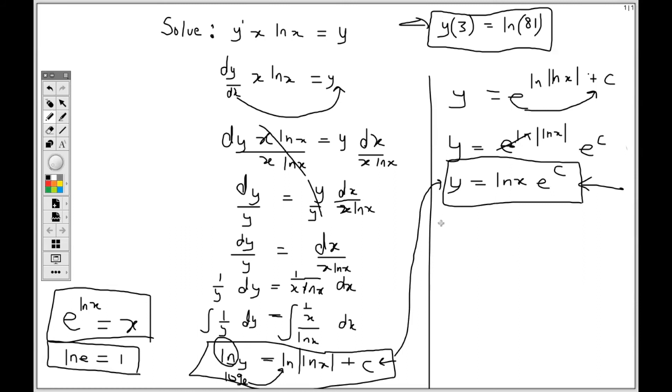Now, I'm given a condition. So that's going to assist me in finding the particular solution. Let's call that PS, where we're given x and y. x is 3 and y is ln 81. Now, substituting into the general solution, you could use any one. I decide to use this one. So I'll have ln 81 equals ln 3 times e to the c. Now, divide both sides by ln 3. So I divide both sides by ln 3. The ln 3 cancels here. So ln 81 divided by ln 3 will give us 4. So e to the c is equal to 4.